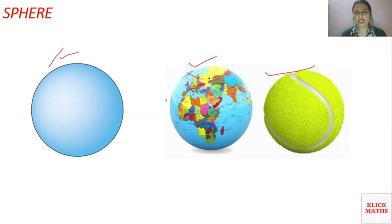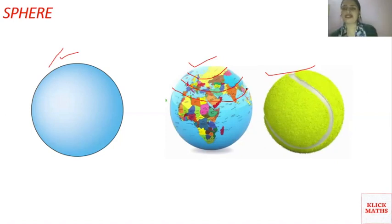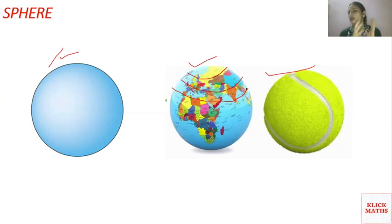If you cut a sphere in all directions — for example, if you cut a ball — each cross-section will be a circle. So a sphere is made from circles: when you cut the sphere, the pieces are circles. Remember this: a sphere is a 3D shape composed of circles.